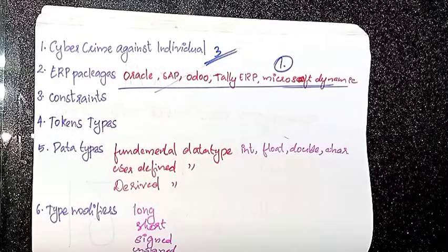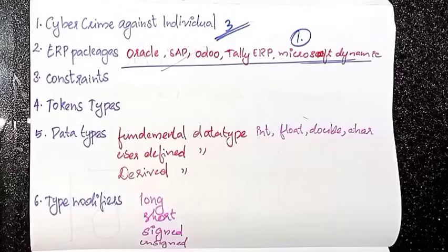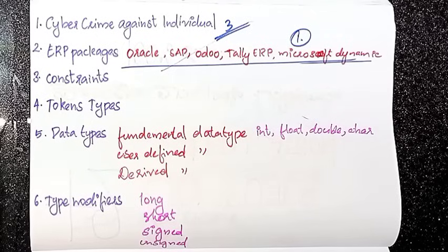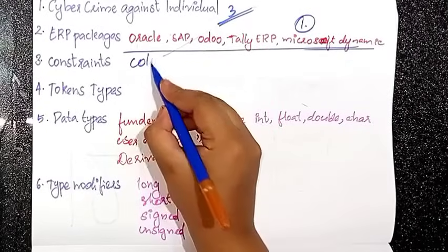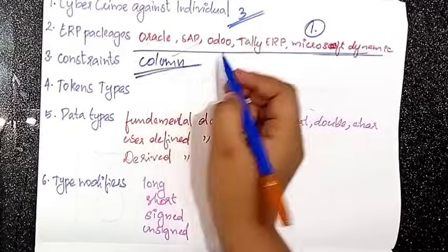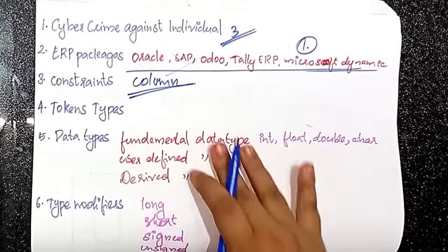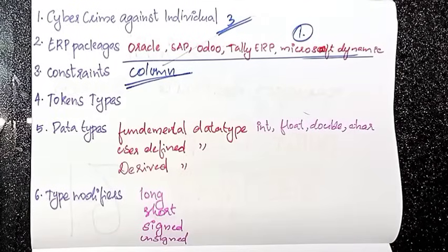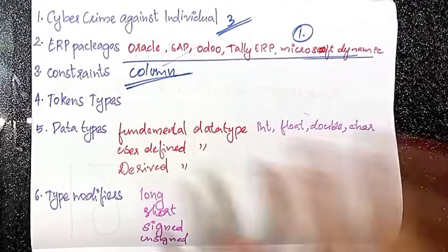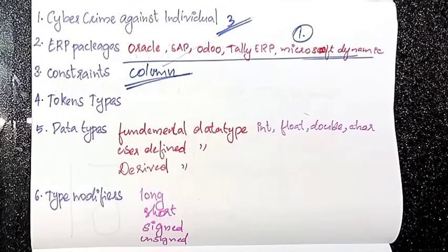The next topic is Constraints — there are different types of constraints. After that, the next topic is Tokens and Types, and the Fundamental Building Blocks of a Program.